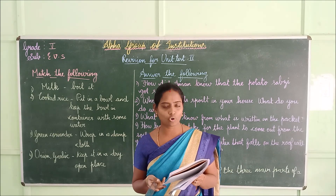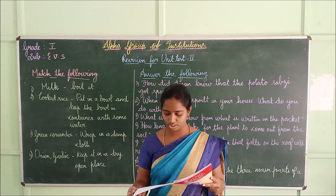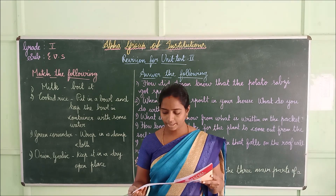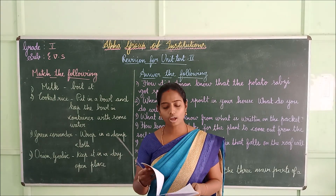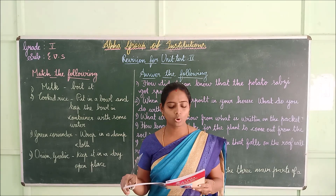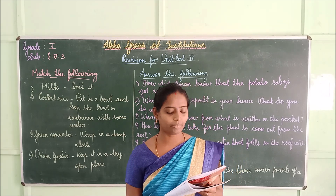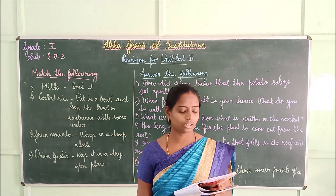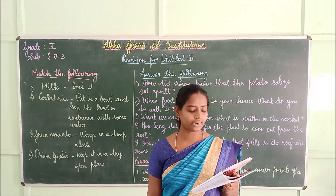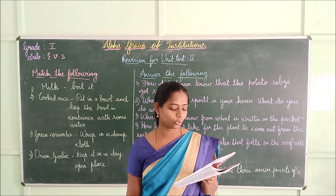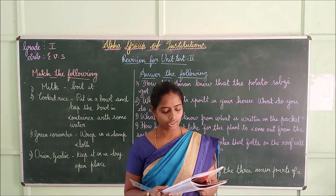Look at the picture of the water bill and answer the following questions. From which office has this bill come? The bill has come from Delhi Jal Board, Delhi. From where is the bill sent? The bill comes from the department of water supply. Why is Delhi Circle written under Delhi Jal Board? Delhi Jal Board is a part of the government of Delhi, that is why Delhi Circle is written under Delhi Jal Board.